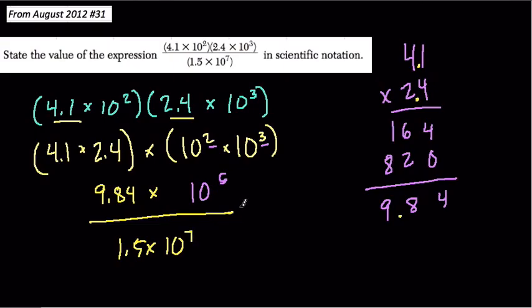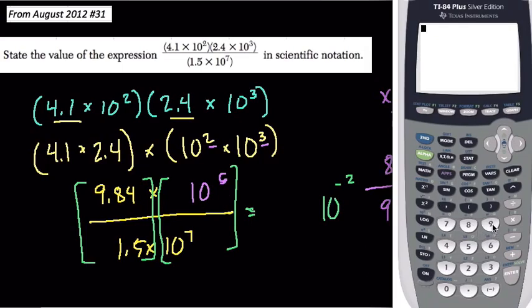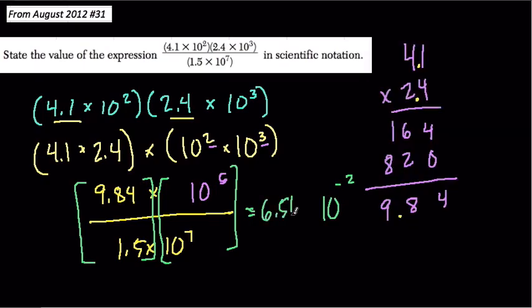What's nice here is that we can group these. Now we're dividing with our powers of 10, so we can subtract exponents. We have 10 to the fifth over 10 to the seventh, which is 10 to the negative 2. And we have 9.84 over 1.5. I'm going to use the graphing calculator: 9.84 divided by 1.5, and we get 6.56. There's our answer: 6.56 times 10 to the negative 2nd.